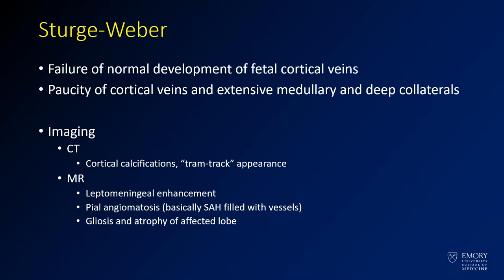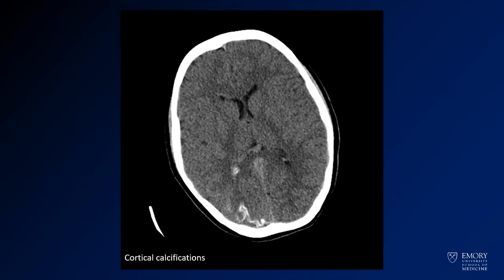You can get gliosis and atrophy of the affected lobe. Here you see the cortical calcifications that we were referring to — this kind of tram-track type of cortical calcification.